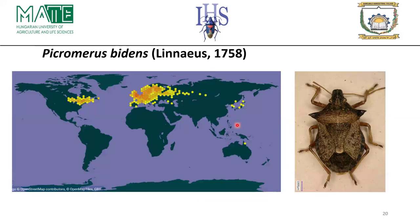Another European Asopinae species is Picromerus bidens, mainly found in Europe including most Scandinavian countries, Finland, and Norway, and extending to Japan and Korea. It has recently also been found in North America, in the USA and Canada.